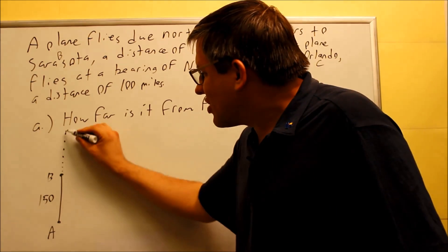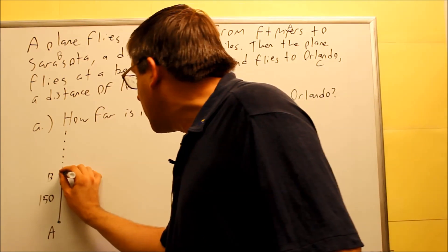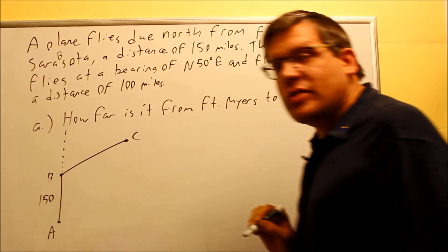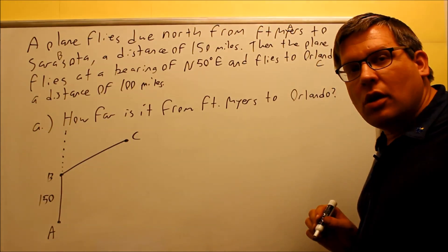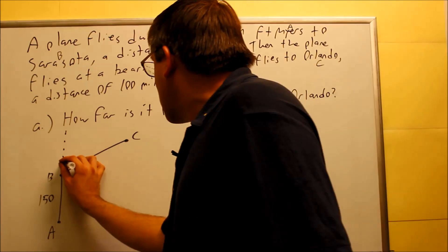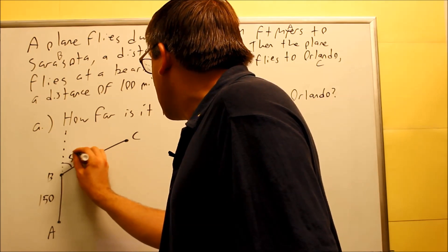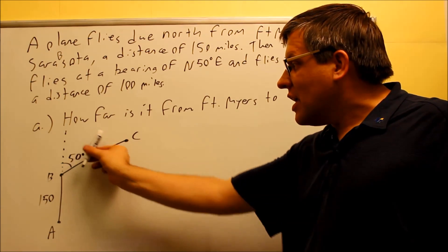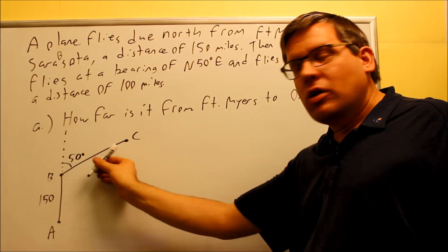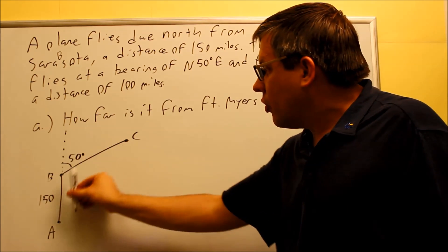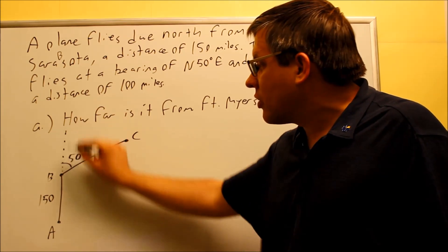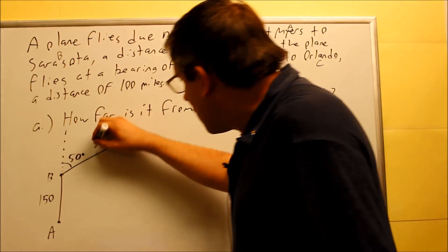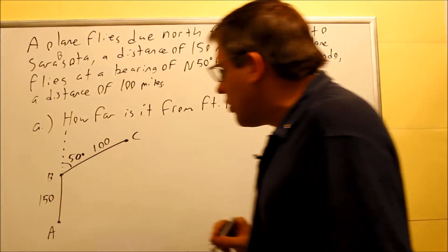I need to measure that from the north. Bearings are always measured from either the north or the south, so I have to extend this line past B here. That's a dotted line. I'm going to draw another line going this way, and that's going to go over to point C, and point C is going to be Orlando. This measurement here has got to be 50 degrees because we're going to go north 50 degrees east. The east is always going to the right. This line right here, it says this is going to be 100 miles.